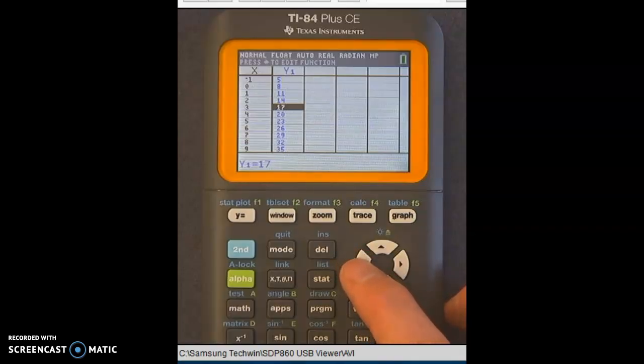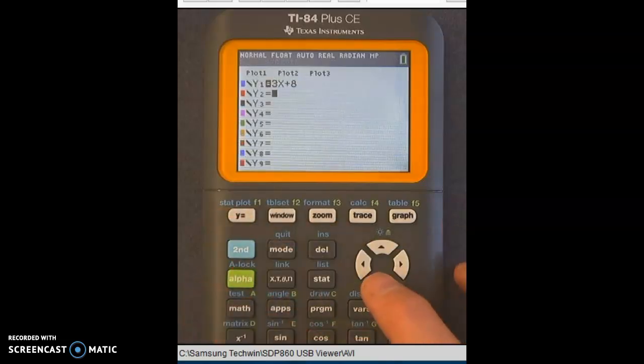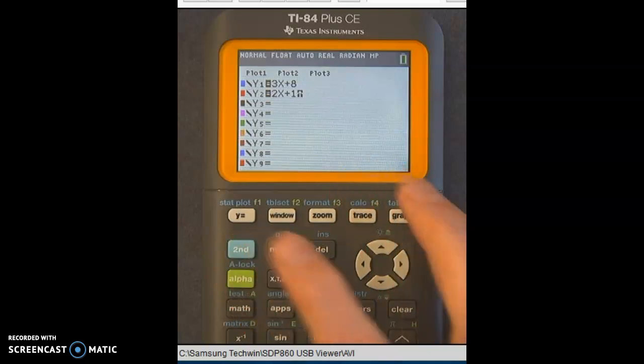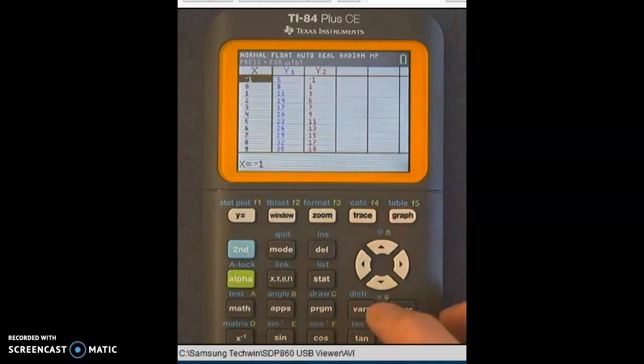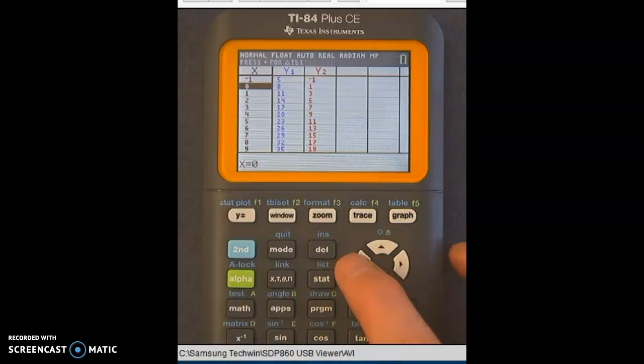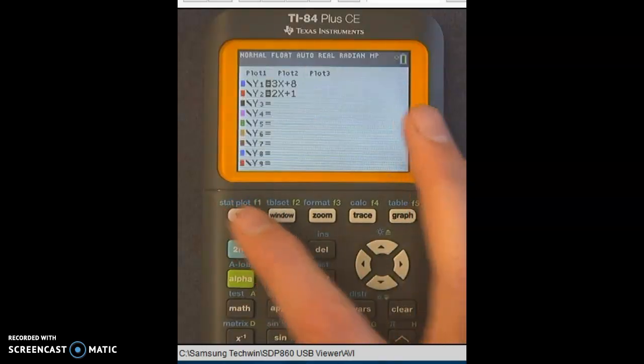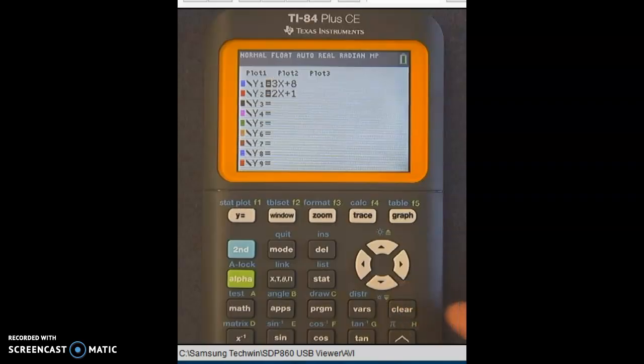And you can kind of make changes to your stuff as well. You can hit Y equals as well to get back, and you can change it. You can actually have more than one in there. And if you have more than one equation in there, you'll see two tables, one for the first function and one for the second. So in the first function, when X is 0, Y is 8. In the second function, when X is 0, Y is 1. So you can put multiple things, as many equations as you can make tables for. Normally, we make one or two tables at most.